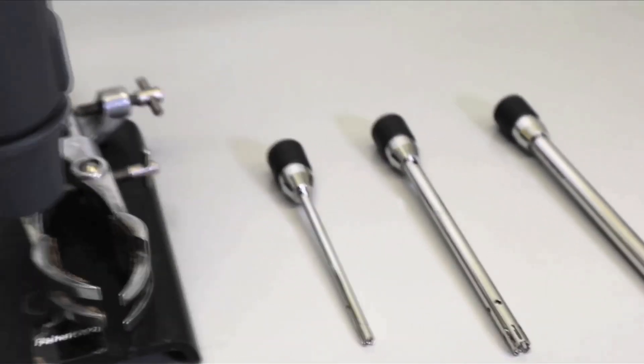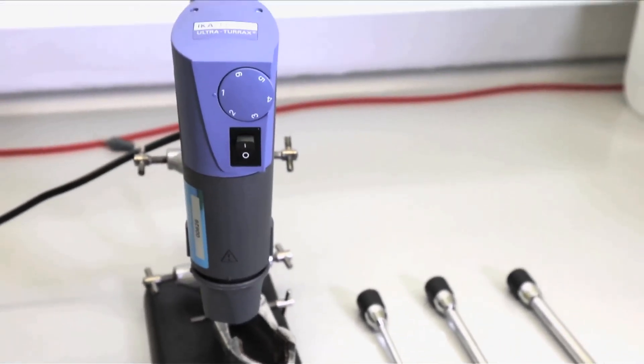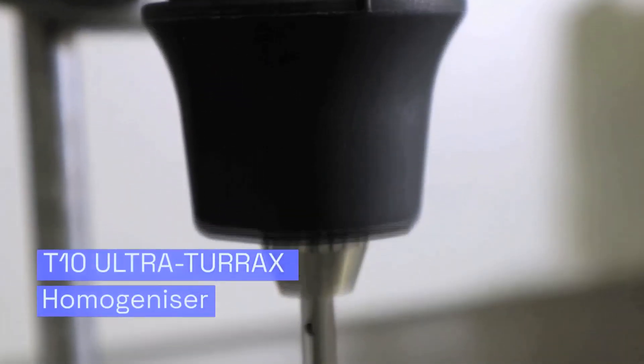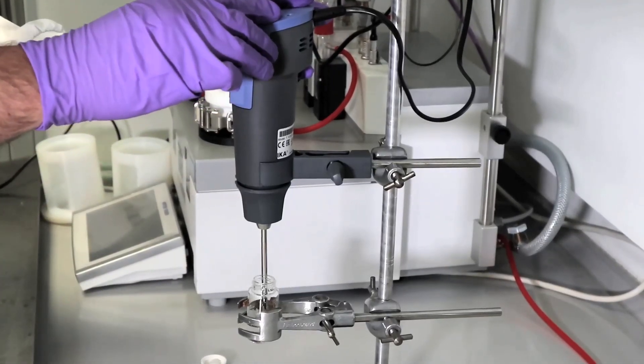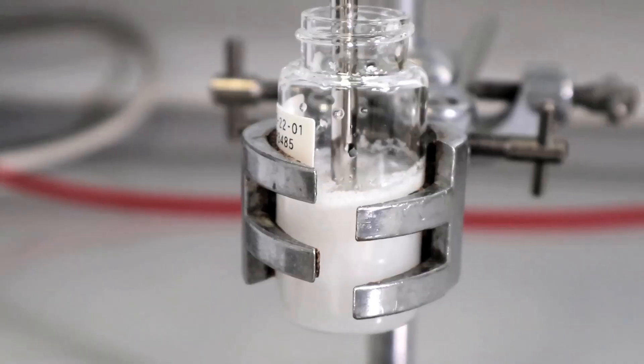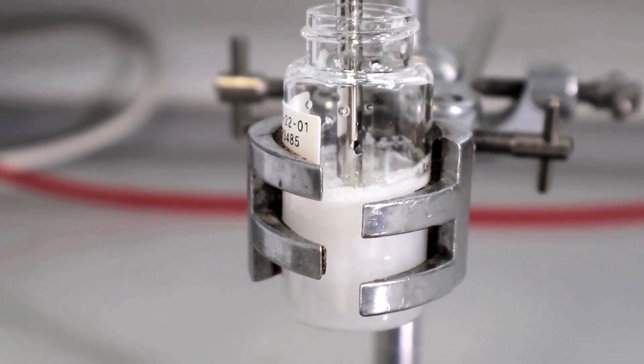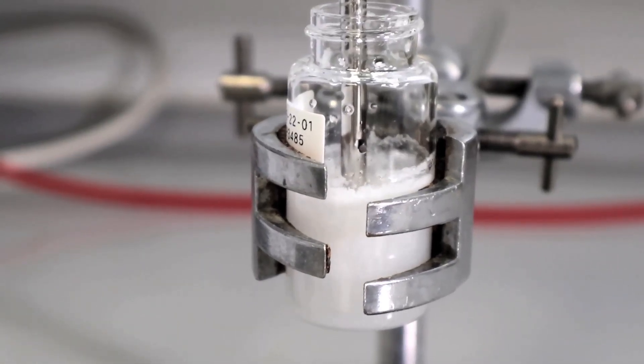We can carry out solvent system assessments at small scale using our ultra-turax dispersion unit, the T10 from Iker. This assessment of wet milling feasibility at an early stage allows us to guide the particle engineering of your product to the correct technology in an efficient streamlined manner.